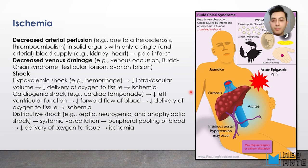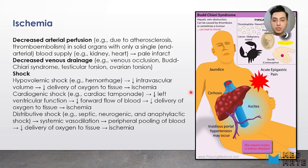Now let's talk about different types of shock. We have hypovolemic shock, which is due to hemorrhage. When there is hypovolemic shock, the concentration of intravascular volume has decreased. Decreased intravascular volume leads to less delivery of oxygen and nutrients to the tissue, and that leads to ischemia.